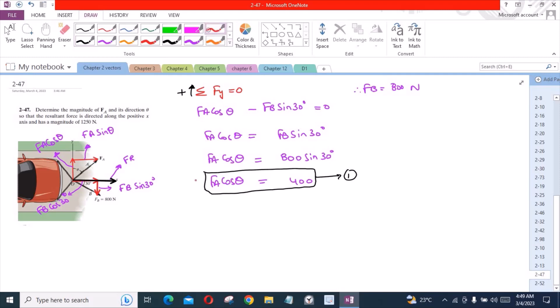Similarly, we have another equation which is sum of forces in x-direction equals to this resultant force which is directed along the positive x-axis and has a magnitude of 1250 newtons. I am considering right hand side as positive. So we have Fa sin theta plus Fb cos 30 degrees equals 1250.